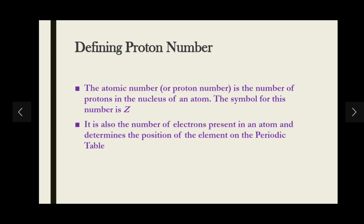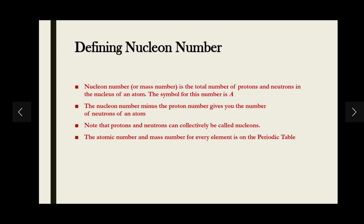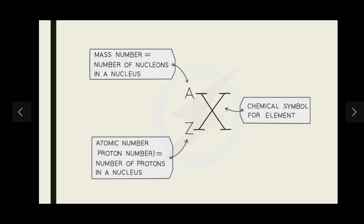The proton number (atomic number) equals both the number of protons and the number of electrons in a neutral atom. Moving on: the nuclear number, or mass number, is the total number of protons and neutrons in the nucleus of an atom. Its symbol is A. The mass only accounts for protons and neutrons, as electrons have negligible mass. Nucleons are the collective term for protons and neutrons.